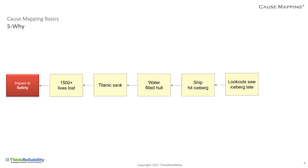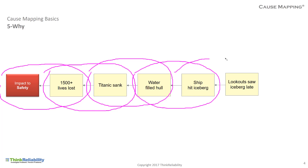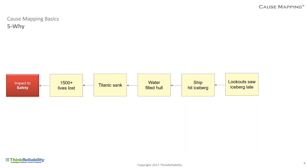What this ties to is the safety goal. The goal for safety in every organization is zero injuries. So the goal has been affected because there were 1,500 fatalities. There were 1,500 fatalities because the Titanic sank, and the Titanic sank because water filled the hole, and water filled the hole because the ship hit an iceberg, and the ship hit an iceberg because the lookout saw the iceberg late. That's just five simple why questions — known as five whys — connecting five cause and effect relationships together, building as a straight line. It's a very simple, easy, accurate, and clear way to begin an analysis.